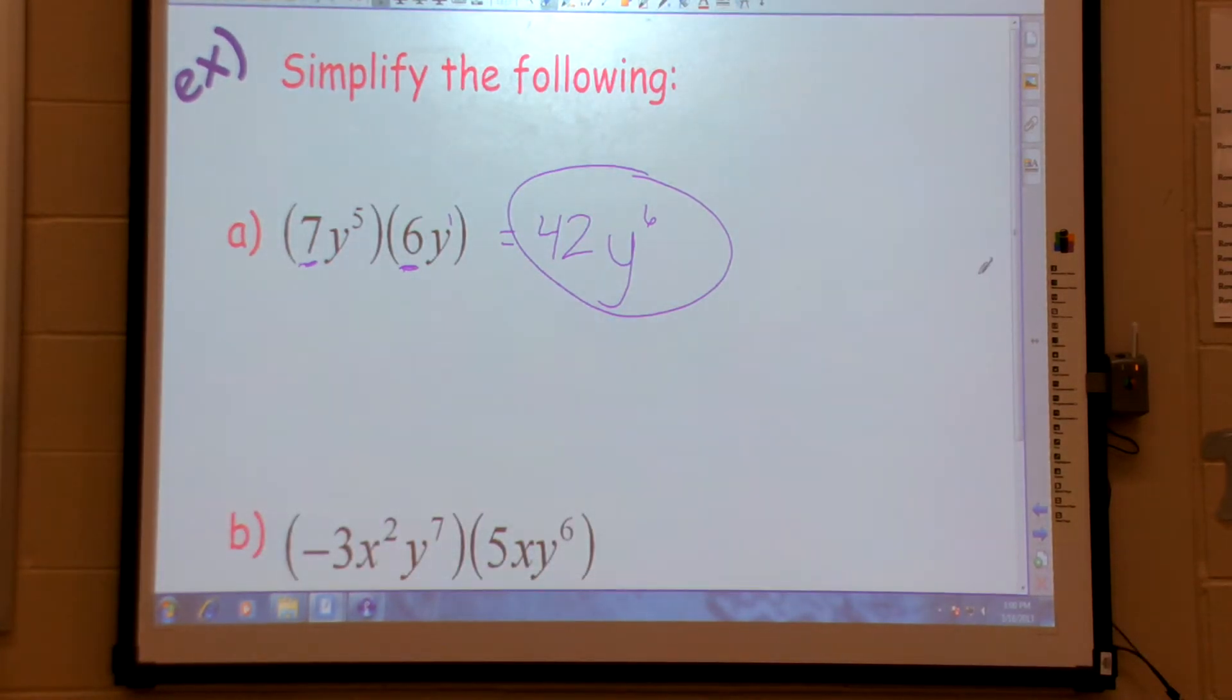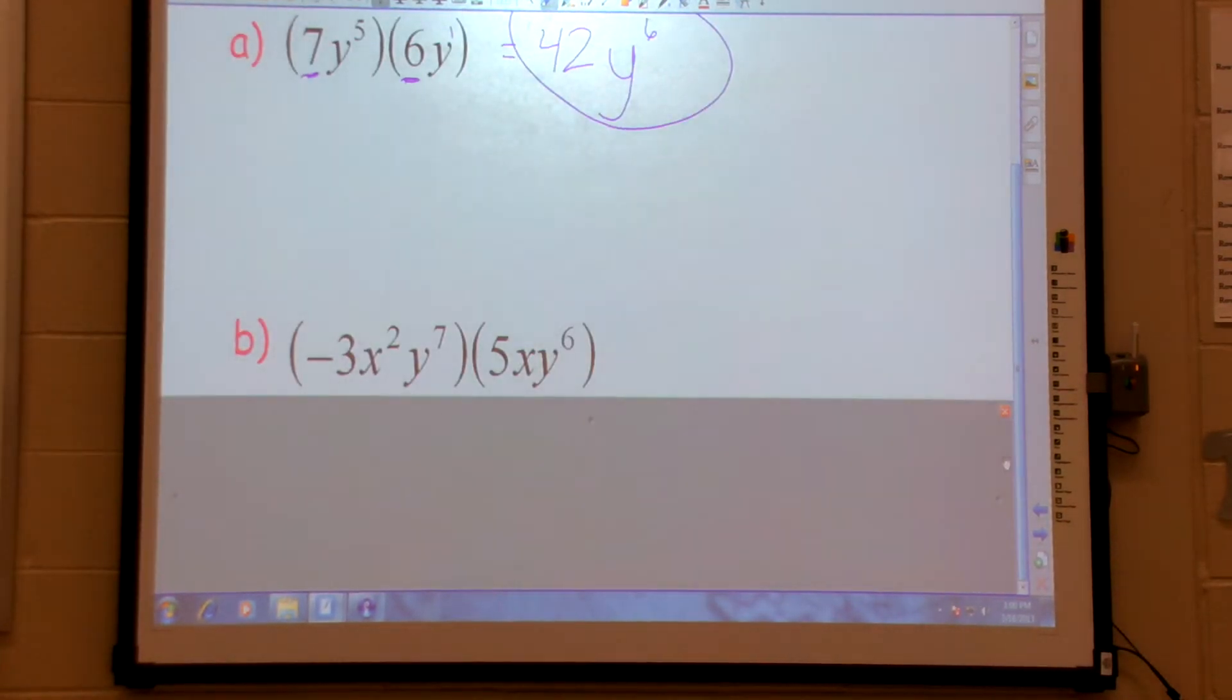Next one, let's scroll down here. Negative 3x squared y to the 7th times 5xy to the 6th.